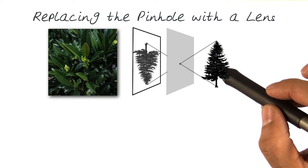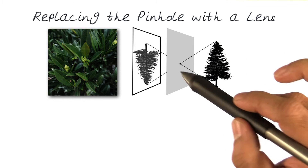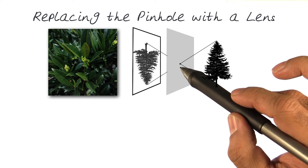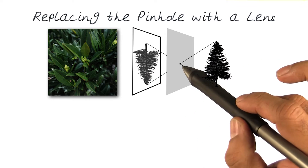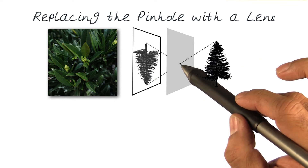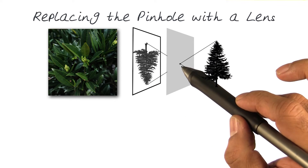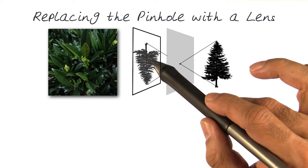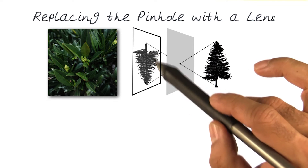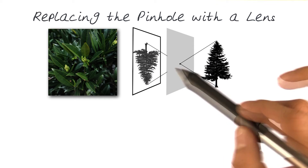Now remember the image that we had before: a tree, light going through a small pinhole, generating an image here. As I said, the smaller the pinhole, the less amount of light will actually pass through, so this would be a much darker image.